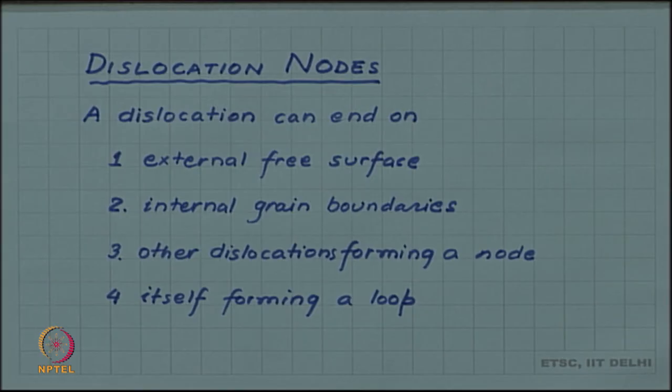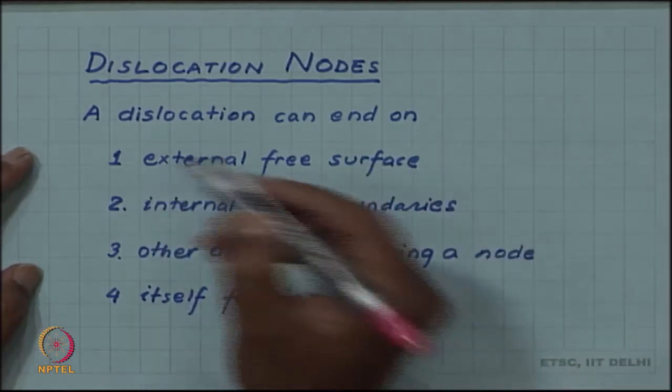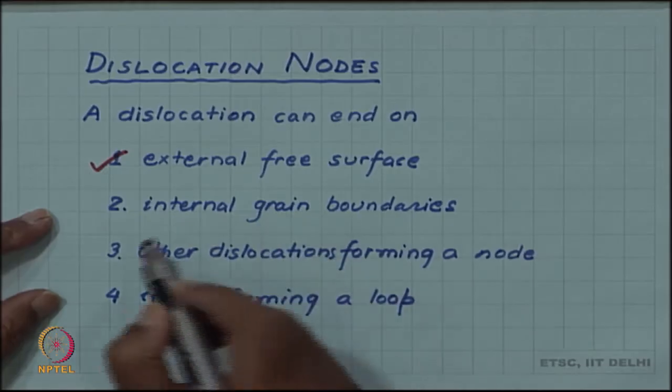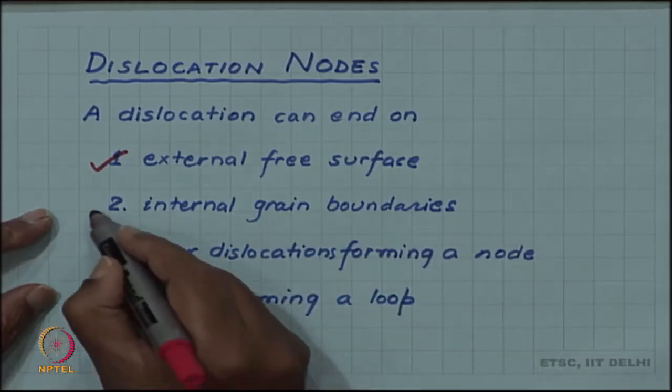We have seen that a dislocation cannot end abruptly inside a crystal, but it can do one of these things. It can end on external free surface, and it can end on internal grain boundaries.